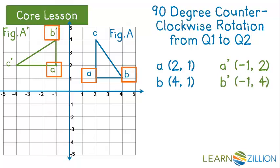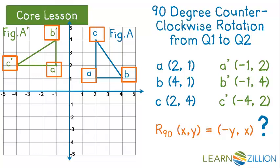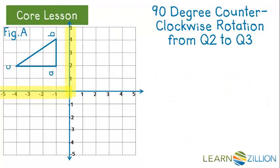B is 4, 1. B prime is negative 1, 4. C is 2, 4. And C prime is negative 4, 2. The x is now the negative of what the y was of the original figure. Will this always happen? We can come up with a hypothesis that after a rotation of 90 degrees, the xy coordinate will be negative y, x. Let's do some more 90 degree rotations to see if this holds.